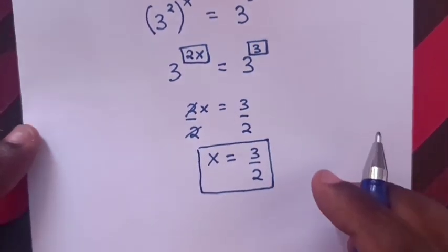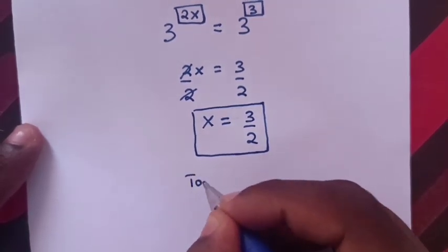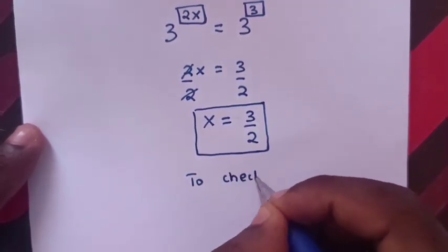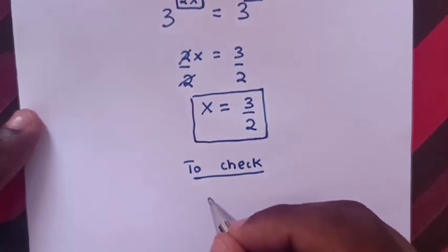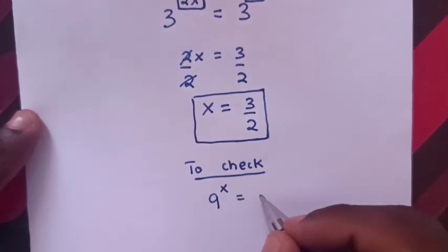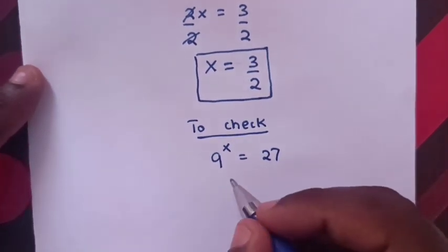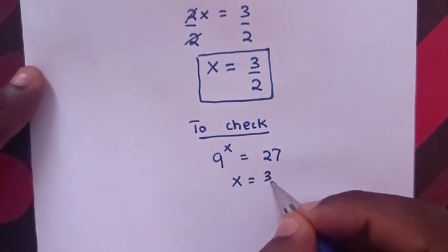Now, to check if our answer is correct. From our problem, which is 9 power x is equal to 27 and the value of x is equal to 3 over 2.